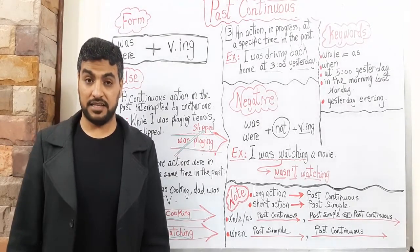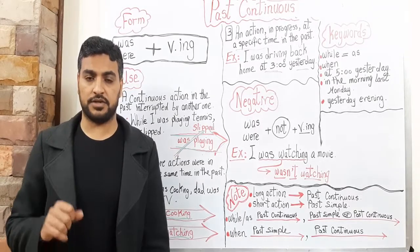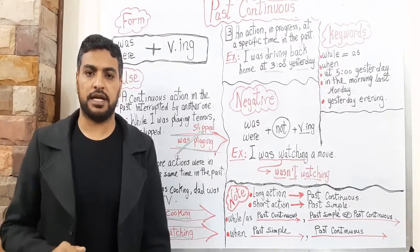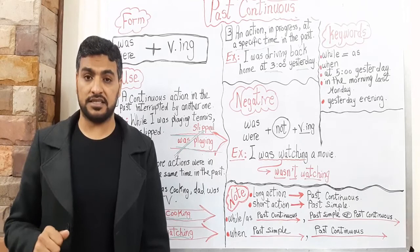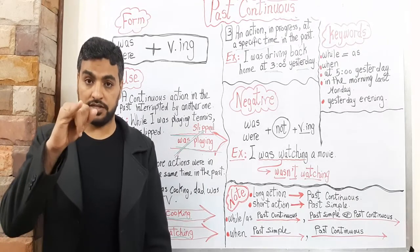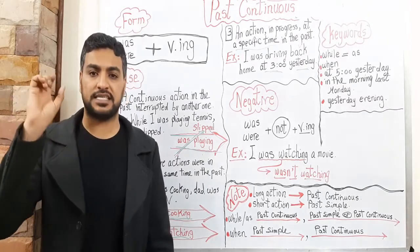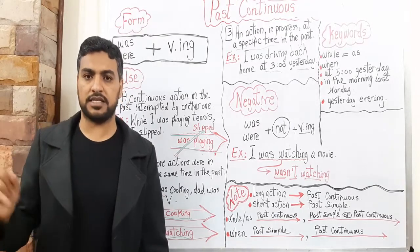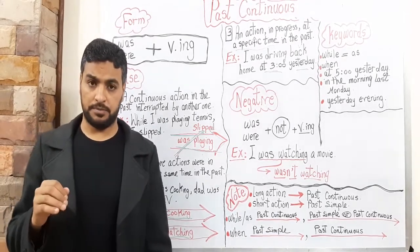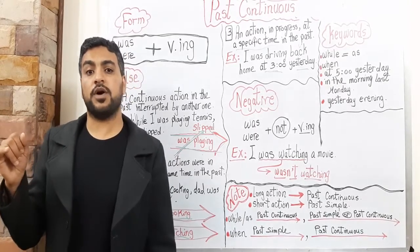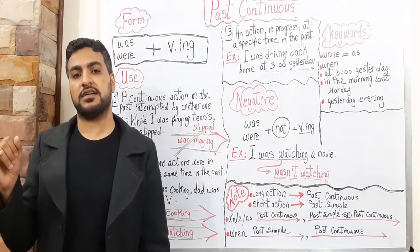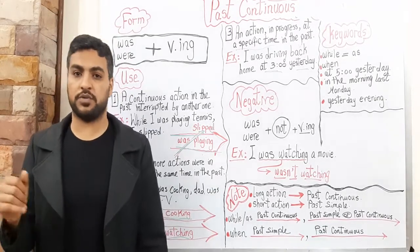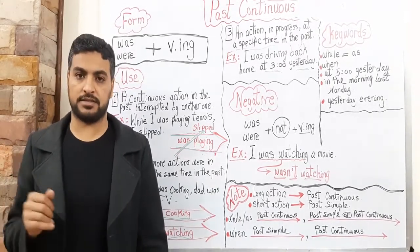Let's talk about the negative. It's the same as Present Continuous. We have: wasn't / weren't plus verb-ING. For example: I was studying → I wasn't studying. They were studying → they were not, or they weren't studying.